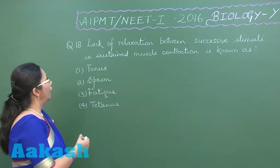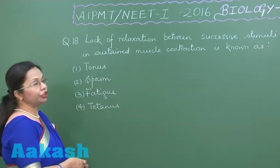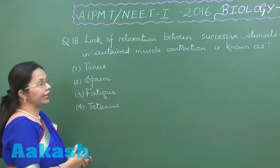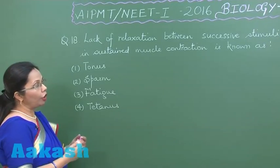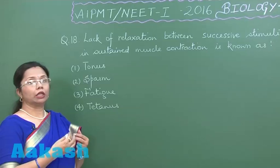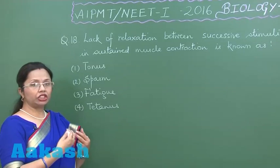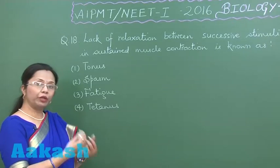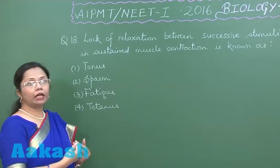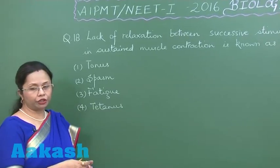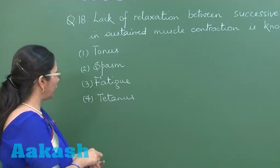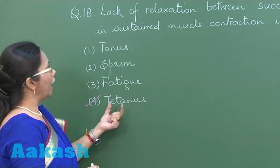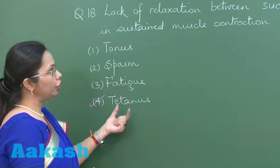Question 18: Lack of relaxation between successive stimuli leading to sustained muscle contraction. If repeated stimuli are given so that the second stimulus arrives just before relaxation from the previous stimulus has begun, that leads to summation of contraction and there is sustained contraction called tetanus. So here the answer is tetanus.